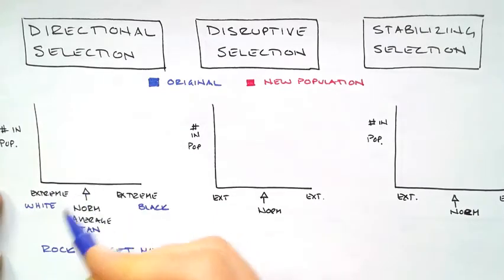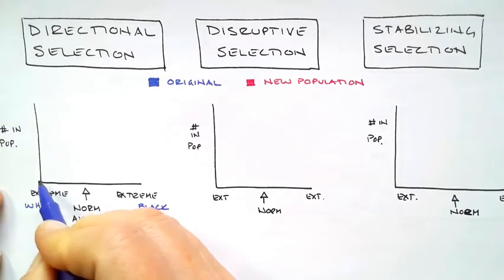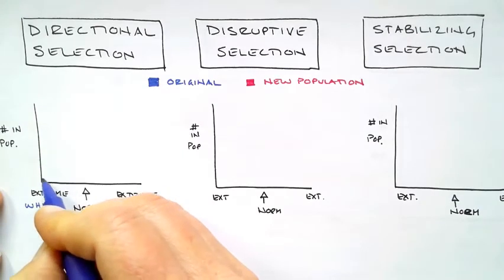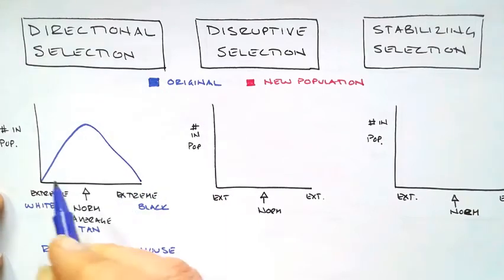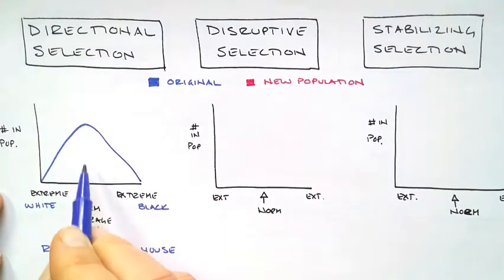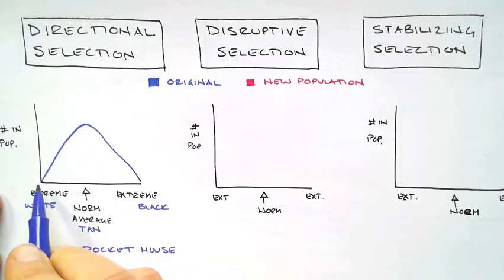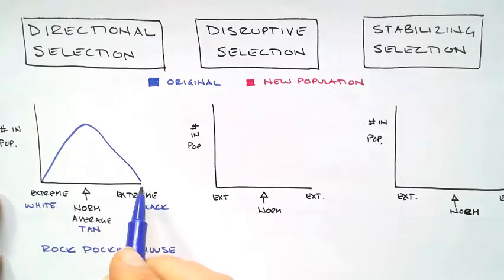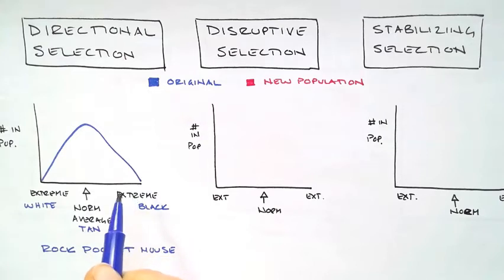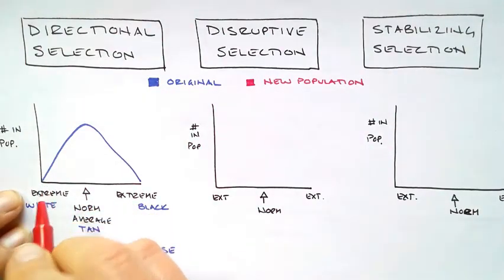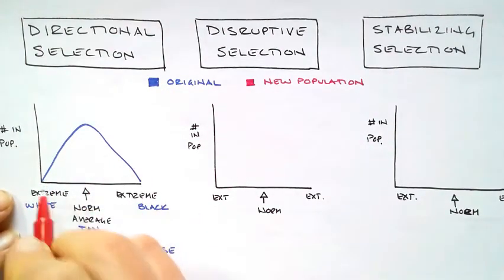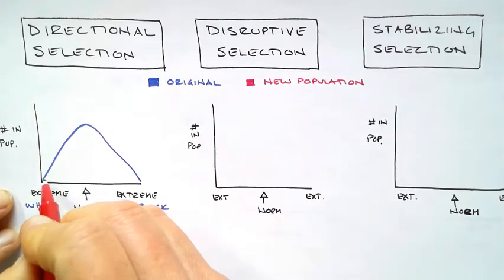So before the volcanic eruptions, the population looked something like this. Okay, they were mostly tan because that was the background of the grassy areas. There may have been a few white ones, there may have been a few black ones, but they probably got picked off and eaten.